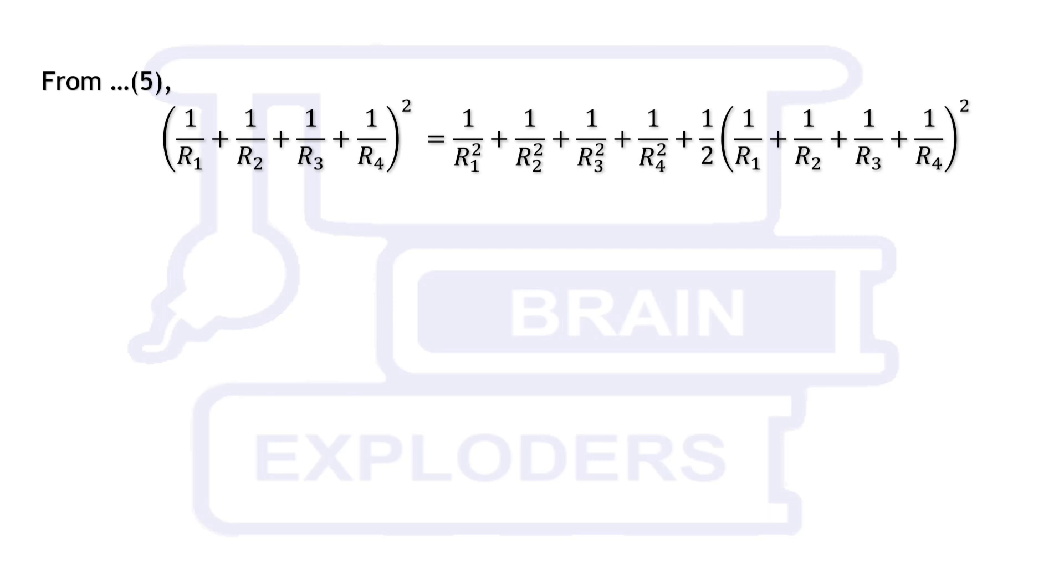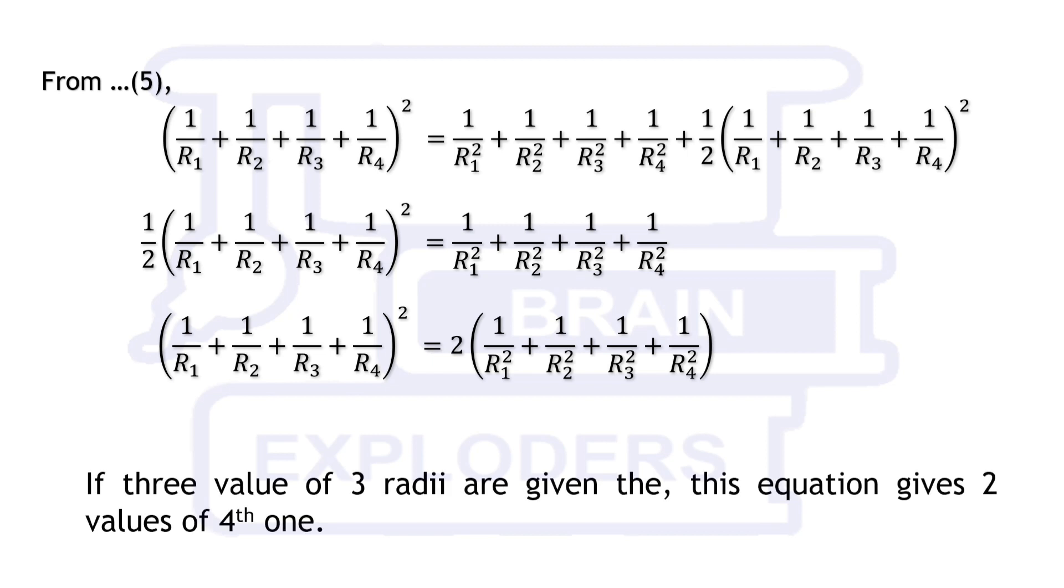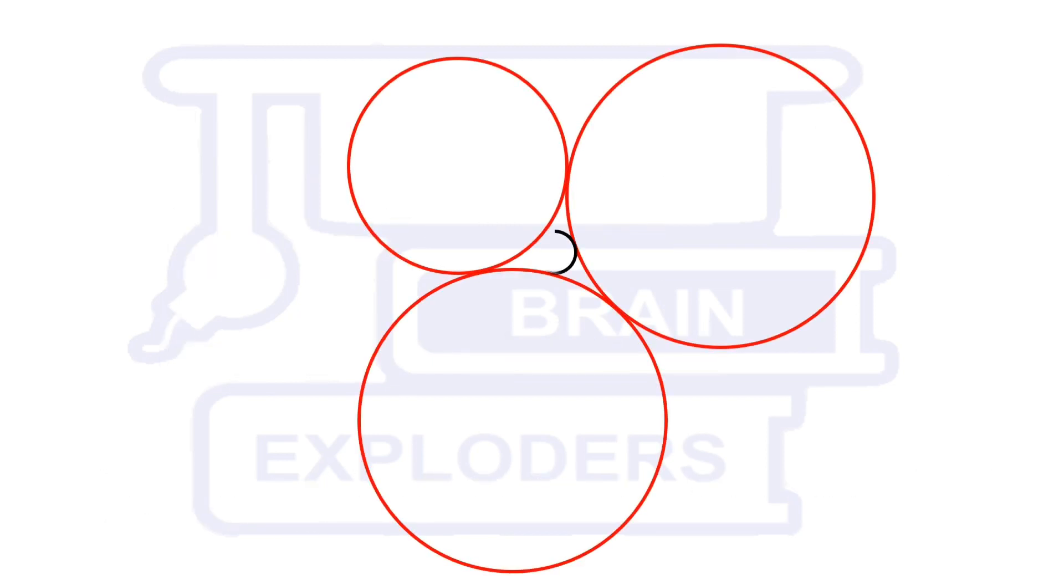Finally, we obtain that for 4 mutually tangent circles, square of sum of reciprocals of radii is equal to twice the sum of reciprocals of their squares. If the value of 3 radii are given then this equation gives two values of fourth one. Both of these values are valid because there are two possible circles which can be made tangent to three mutually tangent circles.